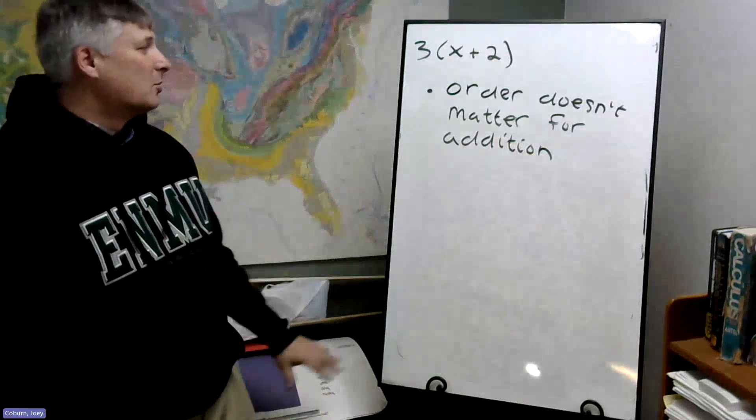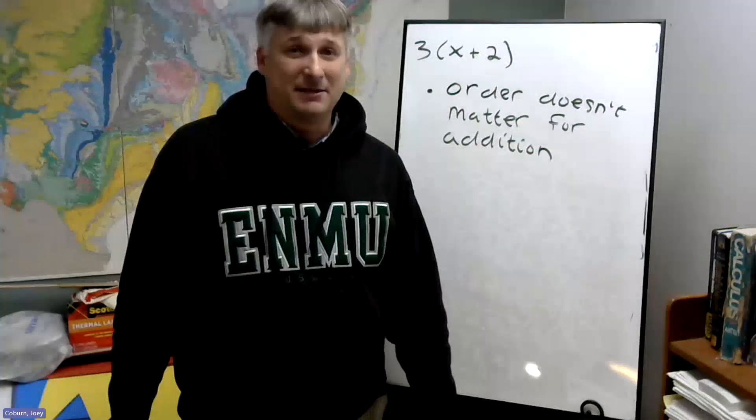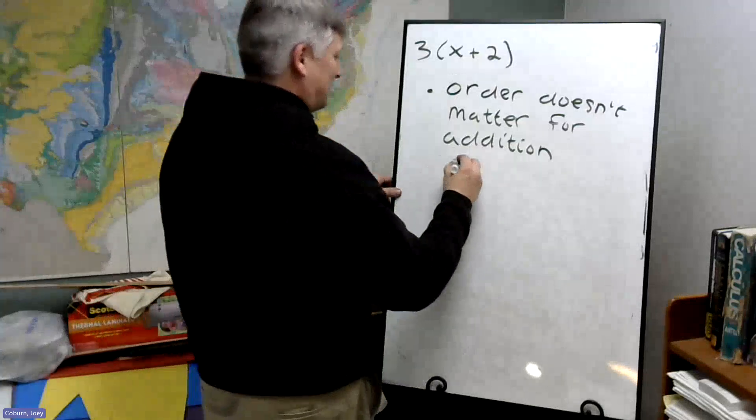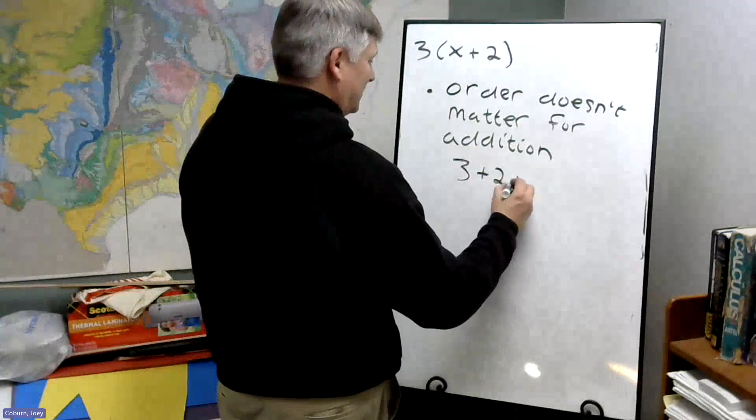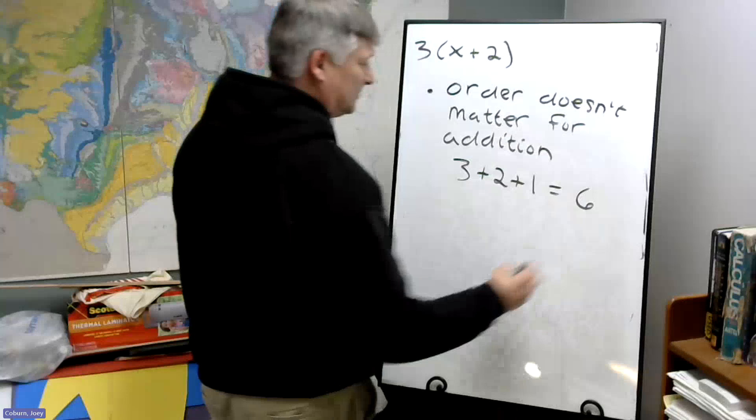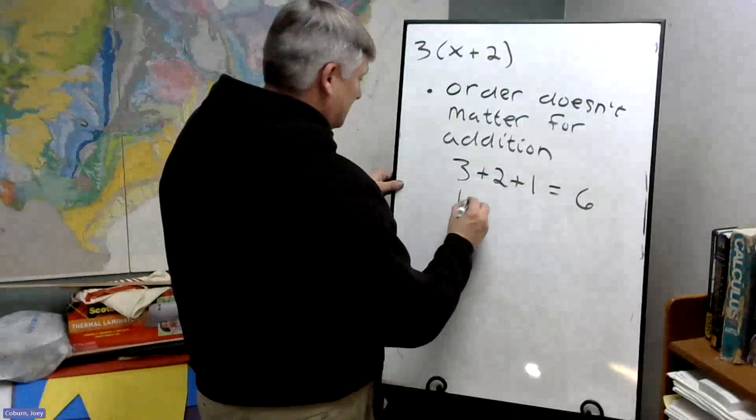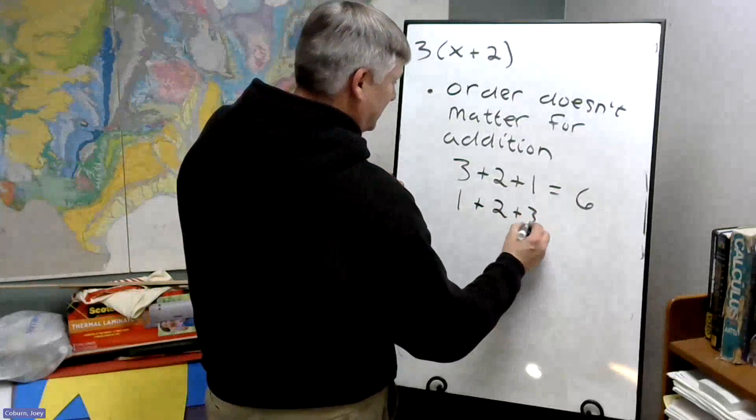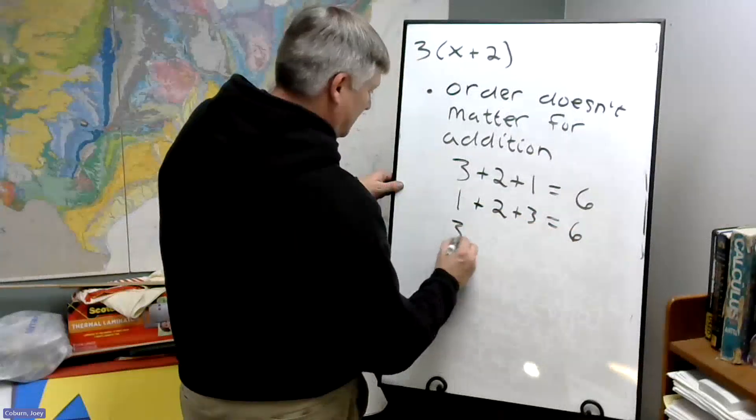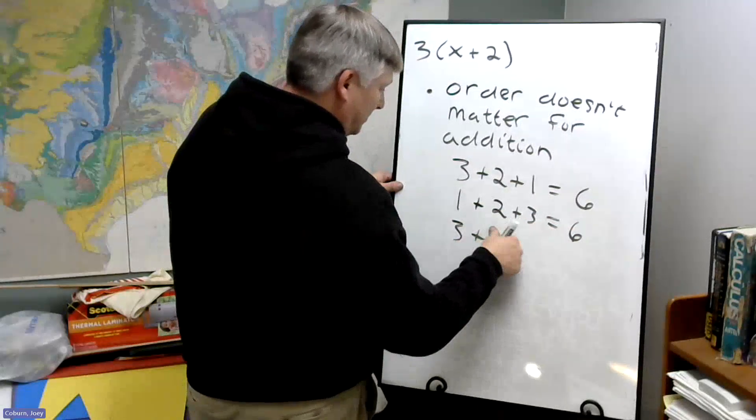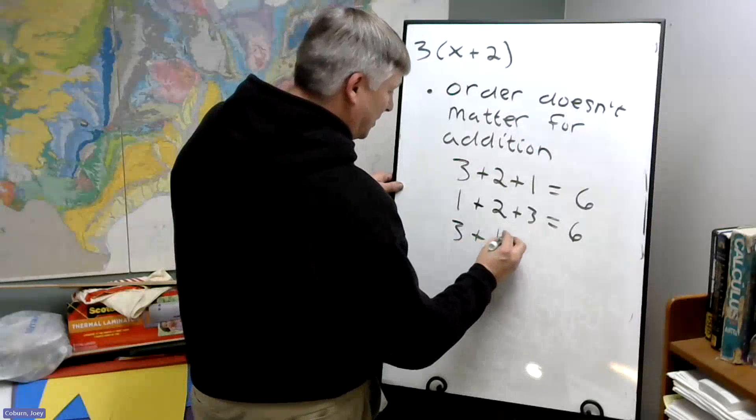Just like with multiplication, order doesn't matter for addition. So 3 plus 2 plus 1 gives you 6, but so does 1 plus 2 plus 3, or 3 plus 1 plus 2, and so on.